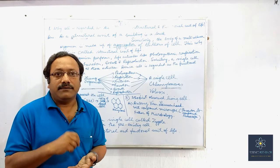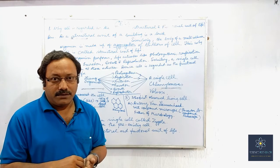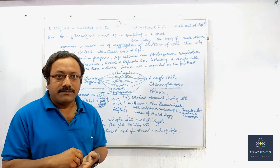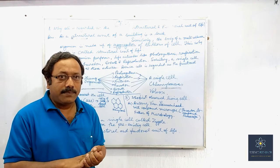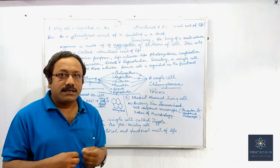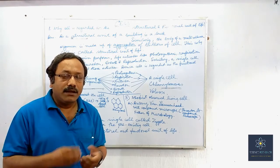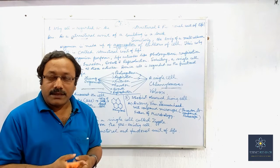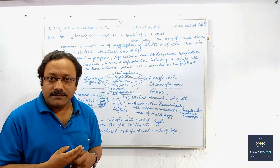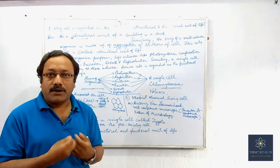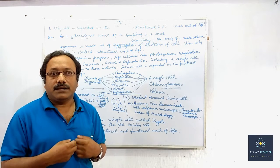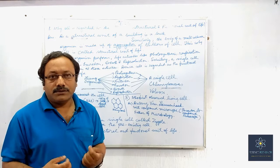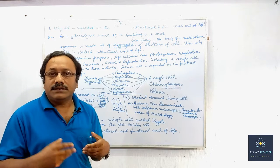The cell is also regarded as the functional unit of life, so the cell is the structural and functional unit of life. Before going into detail, four things are very important. In this video we will discuss: number one, why cell is called the structural and functional unit of life; then who first discovered the cell; then who first invented the compound microscope; and finally, the cell theories.